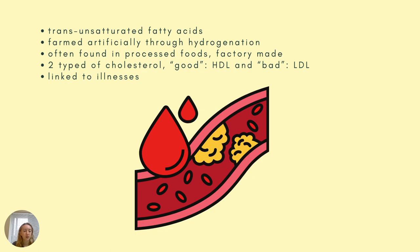Another name for trans fats, or the full name, is trans unsaturated fatty acids. It's formed artificially through hydrogenation. It's often found in processed foods and it's factory made. When it's made artificially through hydrogenation, they usually take vegetable oils and that's how they create the solid fats.